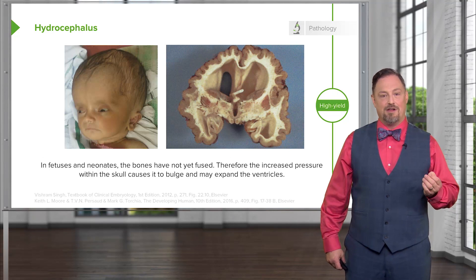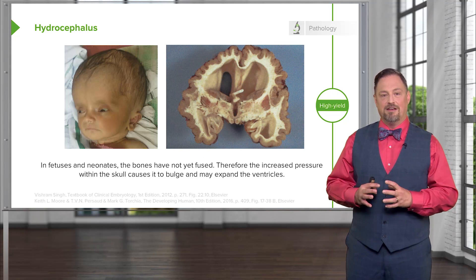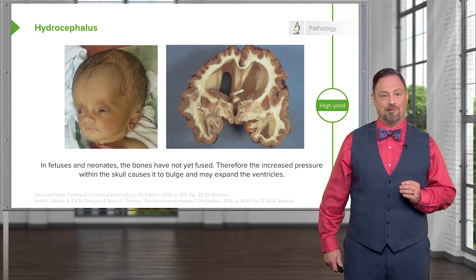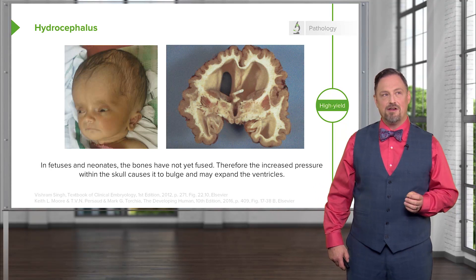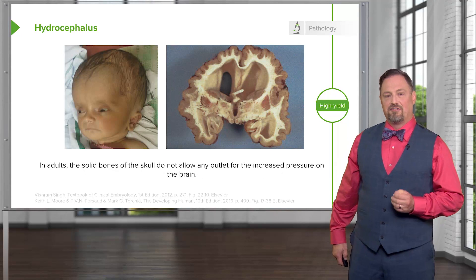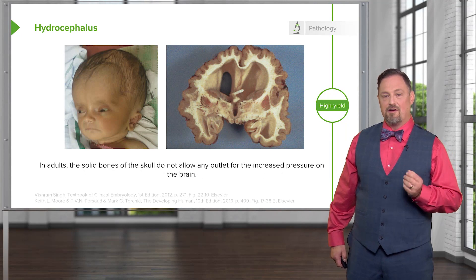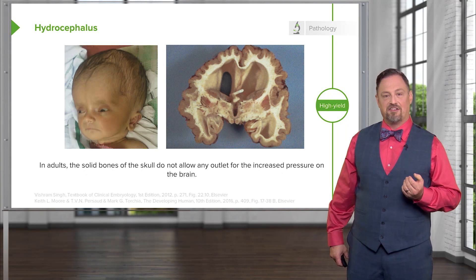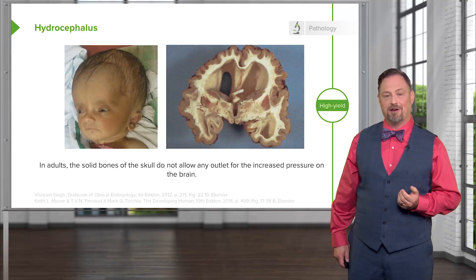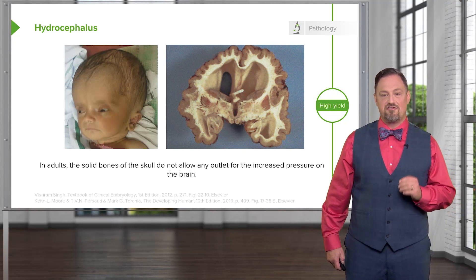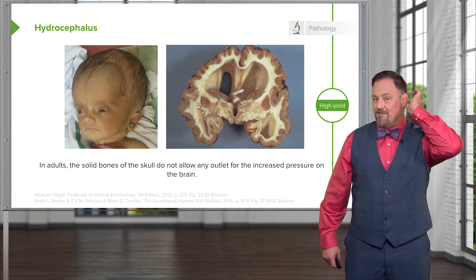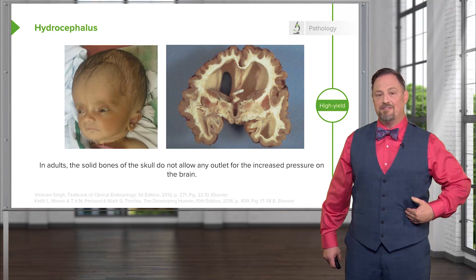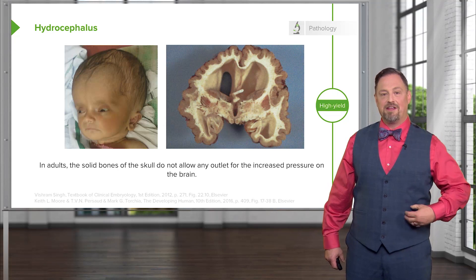In a neonate or infant, the brain swells, but because the bones have not yet completely ossified, it actually causes the head to swell as well, making hydrocephaly very notable. In adults it's a medical emergency requiring a shunt to alleviate pressure. As seen in the pathologic specimen, a shunt is placed inside the ventricles to drain excess fluid, typically threaded through subcutaneous tissue into the peritoneal lining to be absorbed in the body cavity.